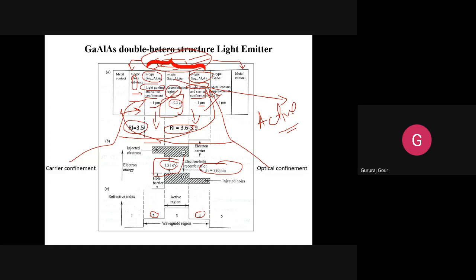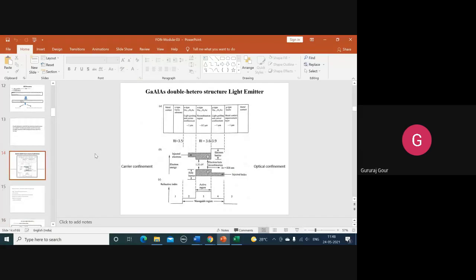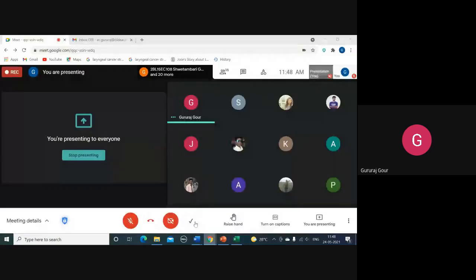So this is how we are able to resolve both the carrier confinement problem and the optical confinement problem using these layers, with the middle active region mainly responsible for generating photons. We will stop here. If you have any questions, that is why I kept this recap class today. Thank you.